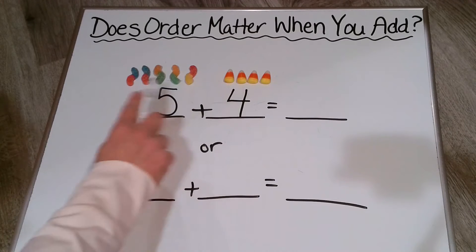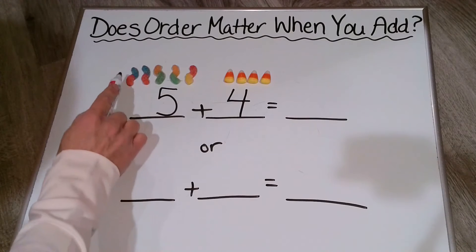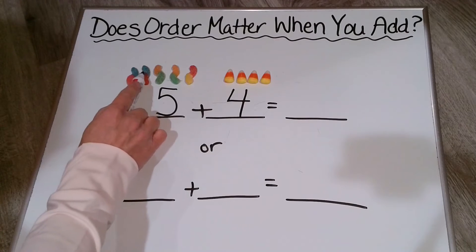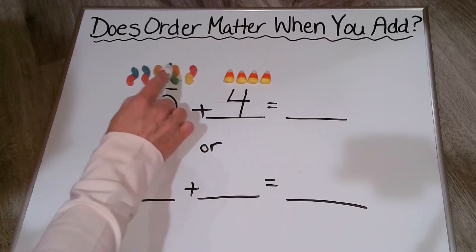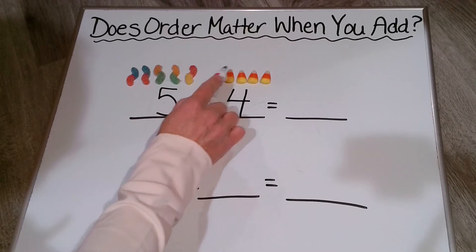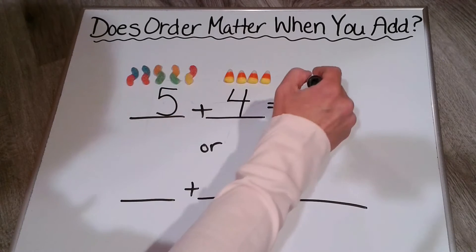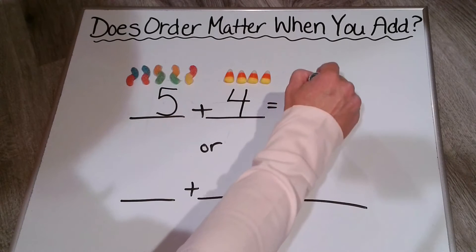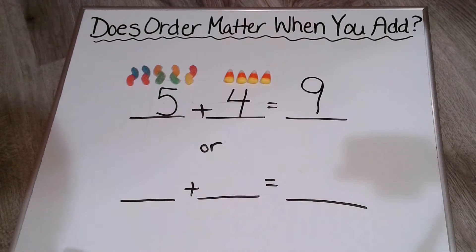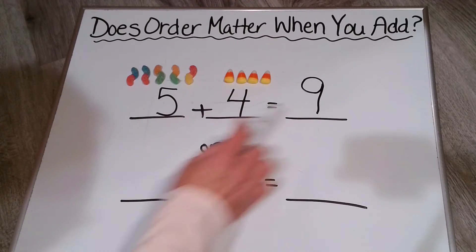So using these pictures, we can help ourselves figure it out. So here we go: 1, 2, 3, 4, 5, 6, 7, 8, 9. So that would be our sum.